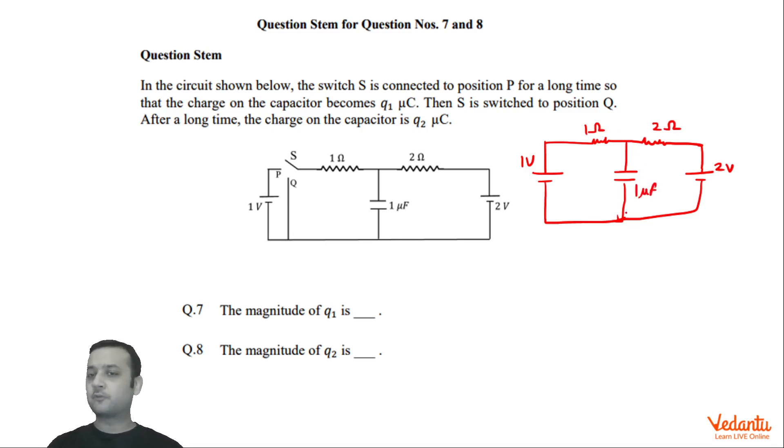So you can see in the steady state there will be no flow of current through this wire because capacitor would have been fully charged. So there will not be any charge flow. So the current will be zero. So in that case we can say that current will be flowing only in this circuit, in this loop. So net emf is plus 2 and minus 1. So we can say that current here will be 1 volt divided by 3 ohms. That means 1 by 3 amperes.